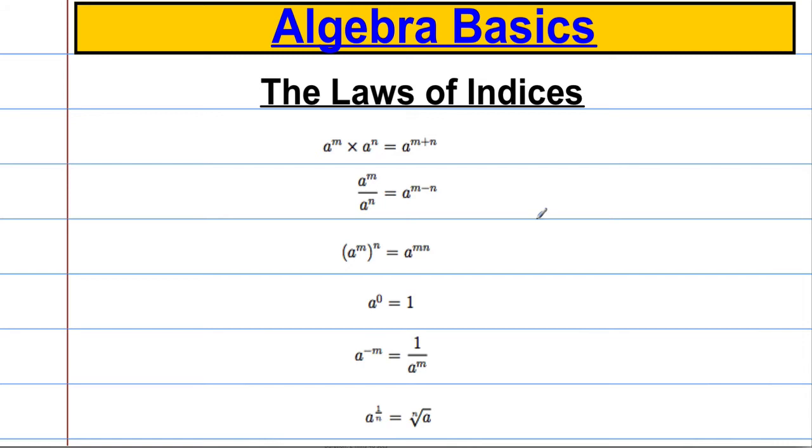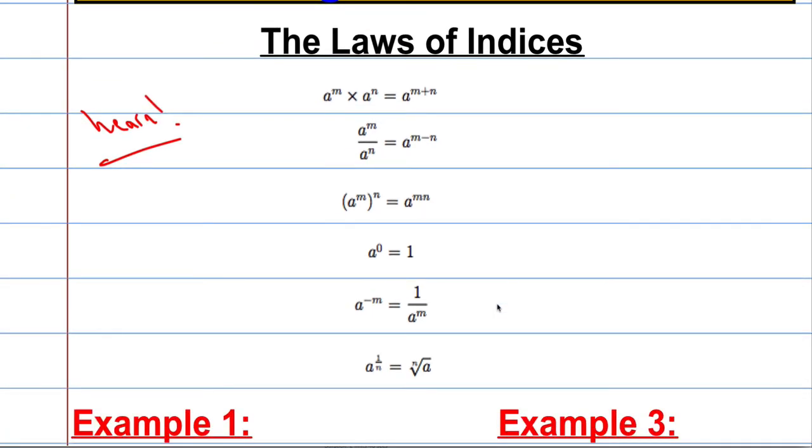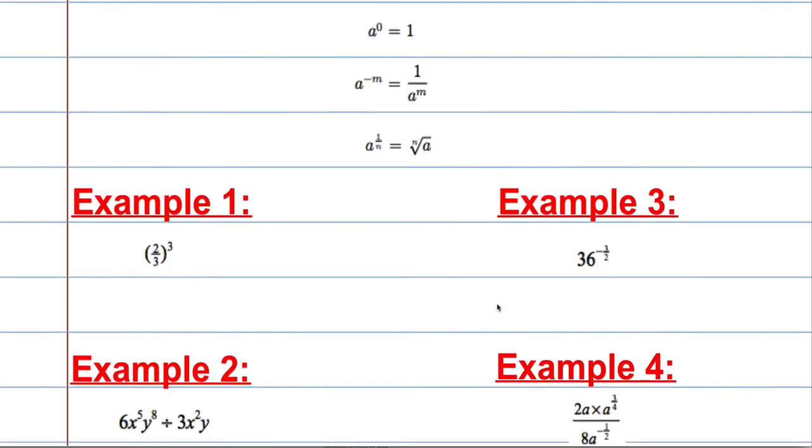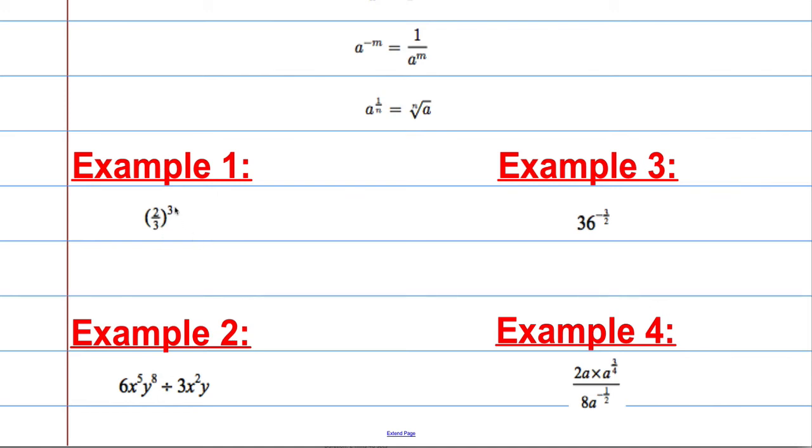The next part of the video is about the laws of indices. Again, you should know all of these. They're absolutely critical to your core maths, so if you don't know them, learn them. If you want to see videos on how these work in more depth and where they came from and why they work, do check out the GCSE videos on them. I'm not going to go through it now because we've already got it done. So let's just do some examples. Suppose I want to do 2 over 3 cubed. Well, that's the same as cubing the top and cubing the bottom, which will give me 8 over 27.